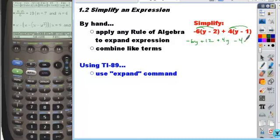So here, in terms of the y's, we have a negative 6y and a plus 4y, and that gives you negative 2y. A plus 12 and a minus 4, and that gives you plus 8. And so this would be your expression.